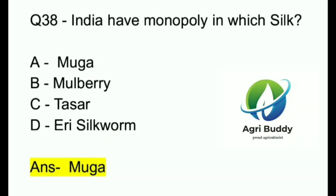Question 38. India has monopoly in which silk? A. Muga. B. Mulberry. C. Tassar. D. Eri silkworm. And the answer is Muga.